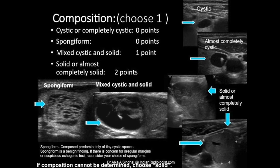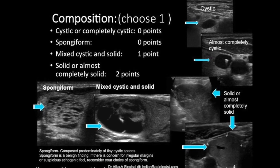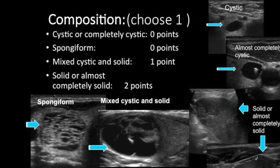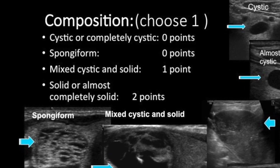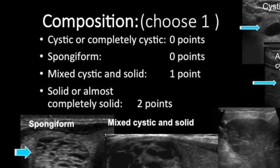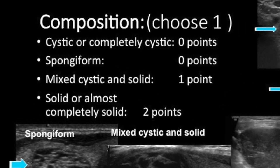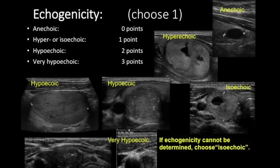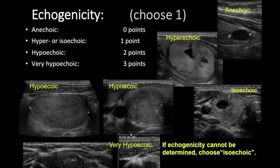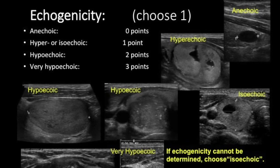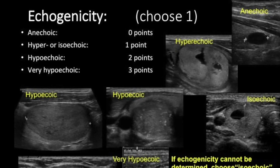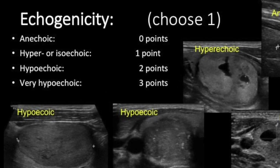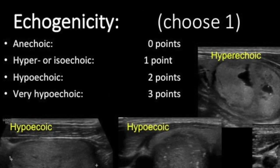For composition: cystic gets zero points, spongiform gets zero points, mixed cystic-solid gets one point, solid or almost completely solid gets two points. For echogenicity: anechoic is zero points, hyper or isoechoic is one point, hypoechoic is two points, and very hypoechoic is three points.